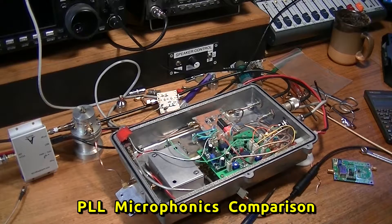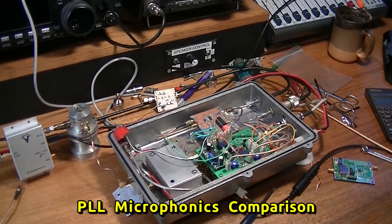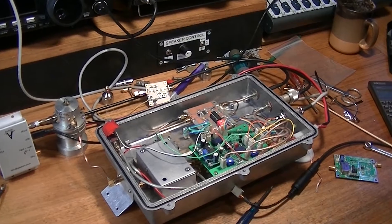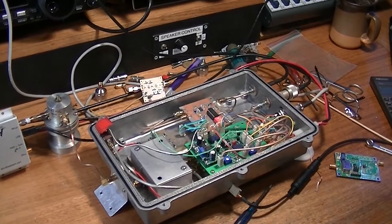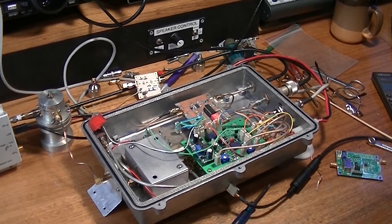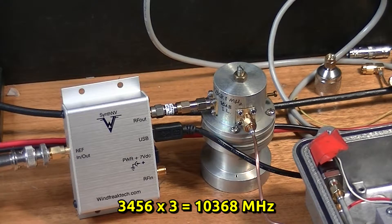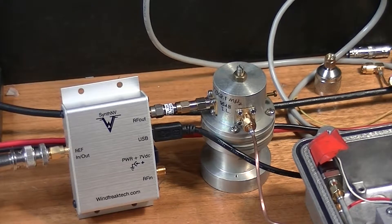This is a PLL microphonics comparison. This is a 10GB transverter system. That tone you hear is a 1kHz tone. I have a signal generator generating a signal on 10368. I'm using a Winfreak Synth NV operating on 3456. We're listening to the third harmonic of that.